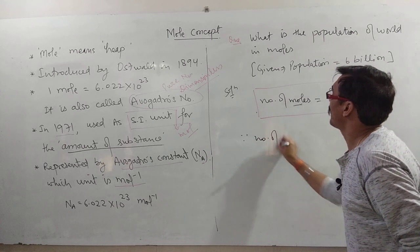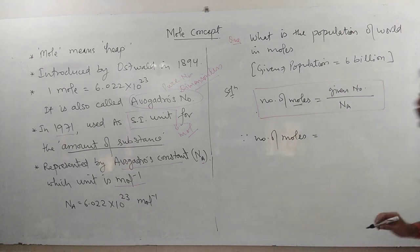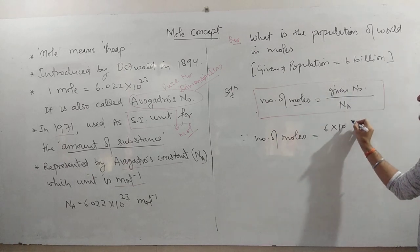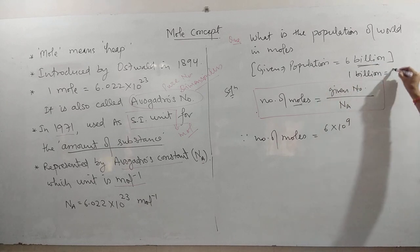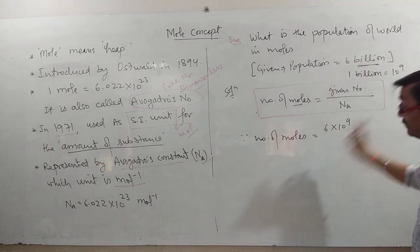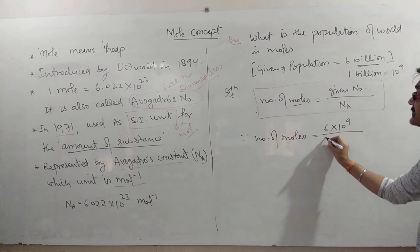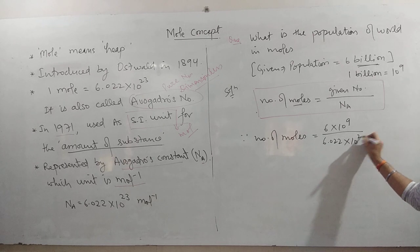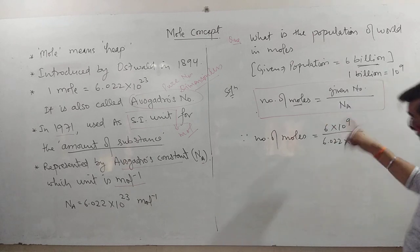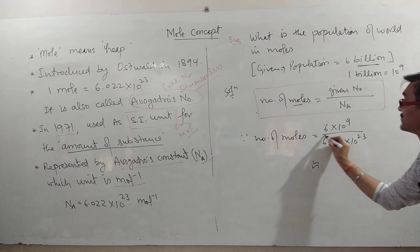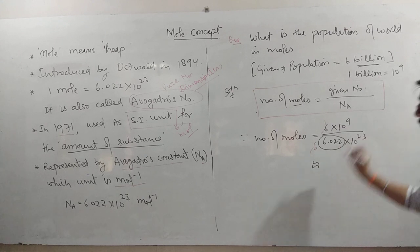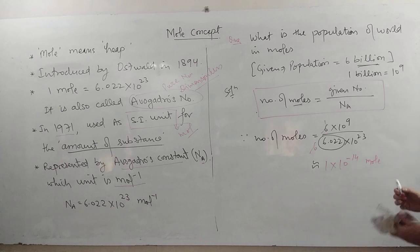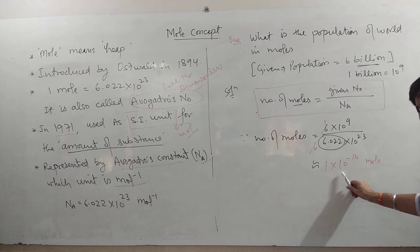Therefore, the number of moles equals 6 billion divided by NA. Since 6 billion means 6 into 10 to the power 9, and NA equals 6.022 into 10 to the power 23, we can approximate 6.022 as 6. So 6 divided by 6 is 1, giving 1 into 10 to the power minus 14 moles. The population of the world is 1 into 10 to the power minus 14 moles — showing just how large Avogadro's number is.